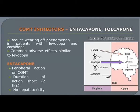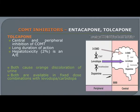Catechol-O-methyltransferase (COMT) inhibitors are used in combination with L-Dopa to inhibit its metabolism and inhibit the formation of 3-O-methyldopamine. This combination includes entacapone and tolcapone. Entacapone inhibits the metabolism of L-Dopa in the periphery, while tolcapone inhibits metabolism both in the periphery and in the central nervous system. Both drugs produce orange discoloration of the urine, similar to rifampicin, which is the anti-TB drug.